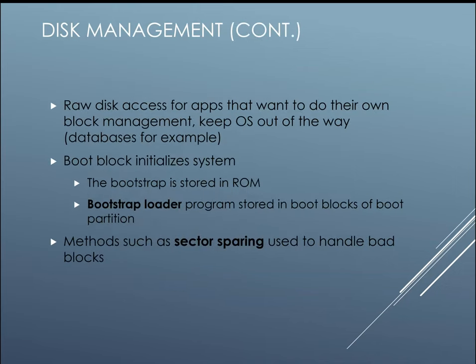Raw disk access is often used for applications that want to manage storage their own way — databases are a good example. There is also a boot block which initializes the system. The bootstrap block is stored in ROM. When the bootstrap loader runs, it's stored in a boot block of a boot partition, and that's what's used to load the operating system. In Windows, we have a master boot record containing boot code that references a partition table, which tells us where to find the boot partition.